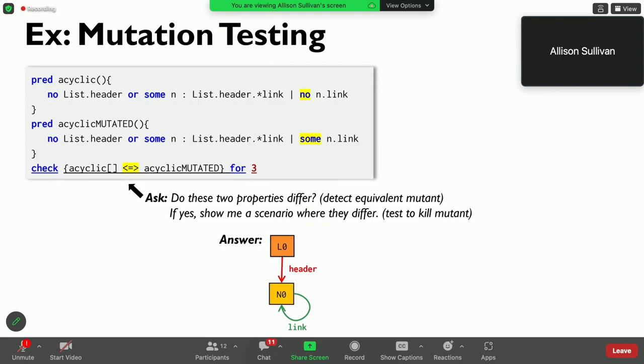if we create a mutation, the modeling language itself allows us to ask, is there ever a situation in which these two formulas differ from each other?